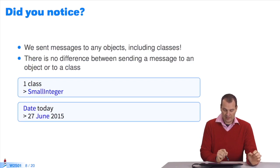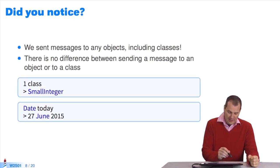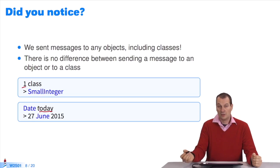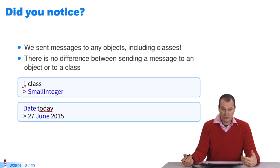I don't know whether you noticed, but I sent messages to objects as well as messages to classes in the exact same way. I didn't say it's a class, careful, you have to do something. In Pharo, classes are also objects. Messages sent to classes are processed like messages to instances, which makes complete sense.